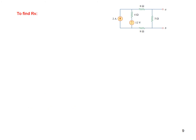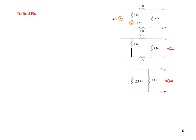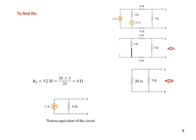To find Rn, we put the sources to zero — the voltage source is short-circuited and the current source is open-circuited. Looking from the terminal side, the three resistances 8, 4, and 8 are now in series, giving 20 ohm. Then 20 and 5 are in parallel, so R0 equals 4 ohm. This is our Norton equivalent circuit with IN = 1 ampere and Rn = 4 ohm.